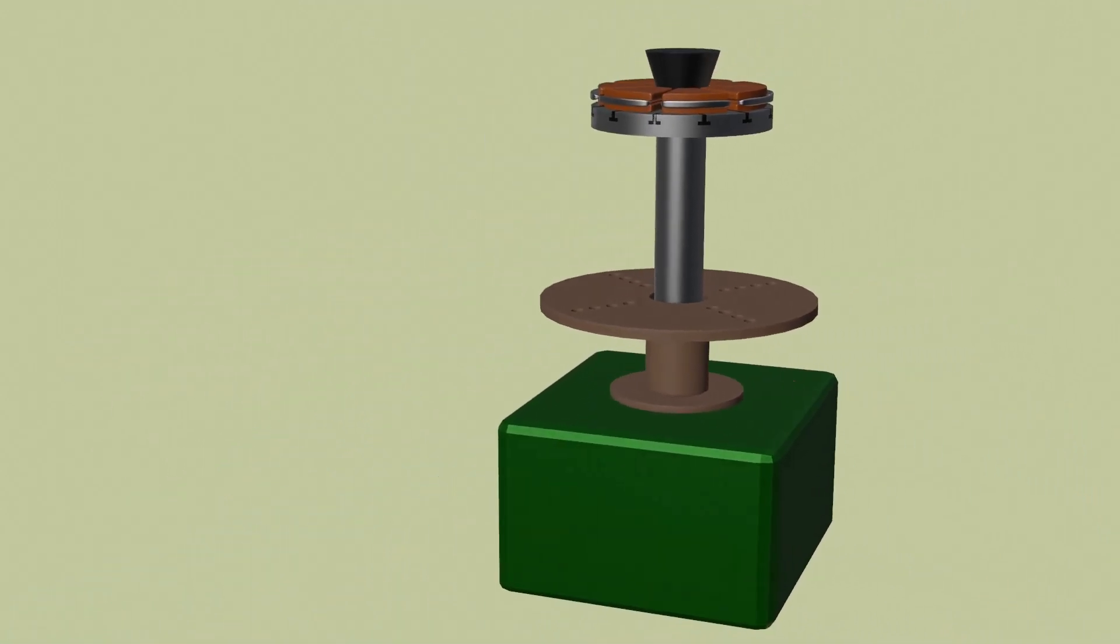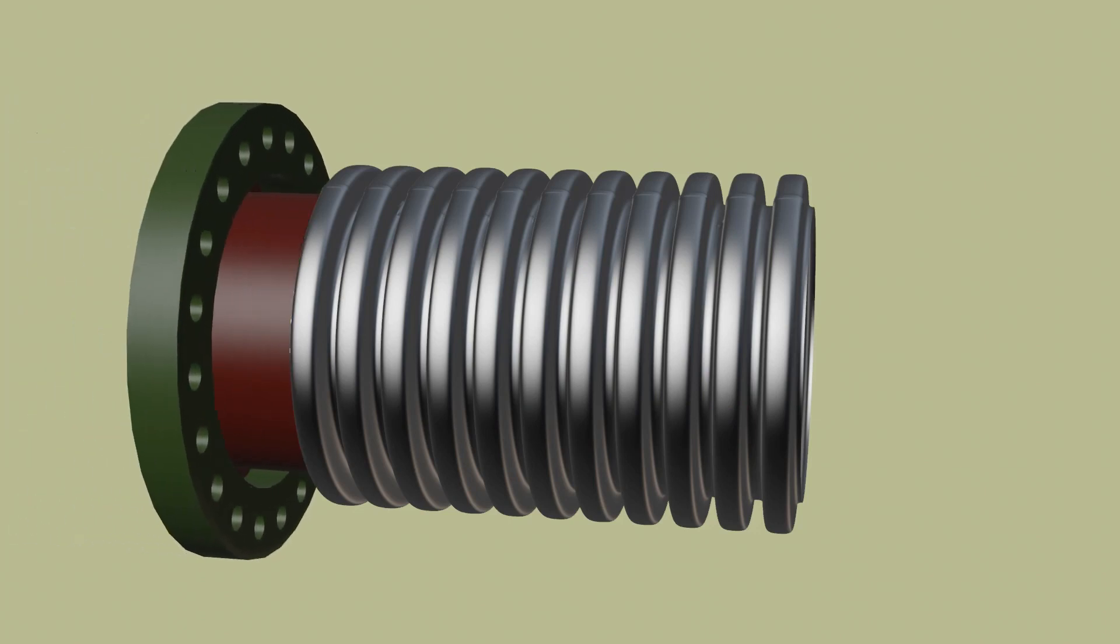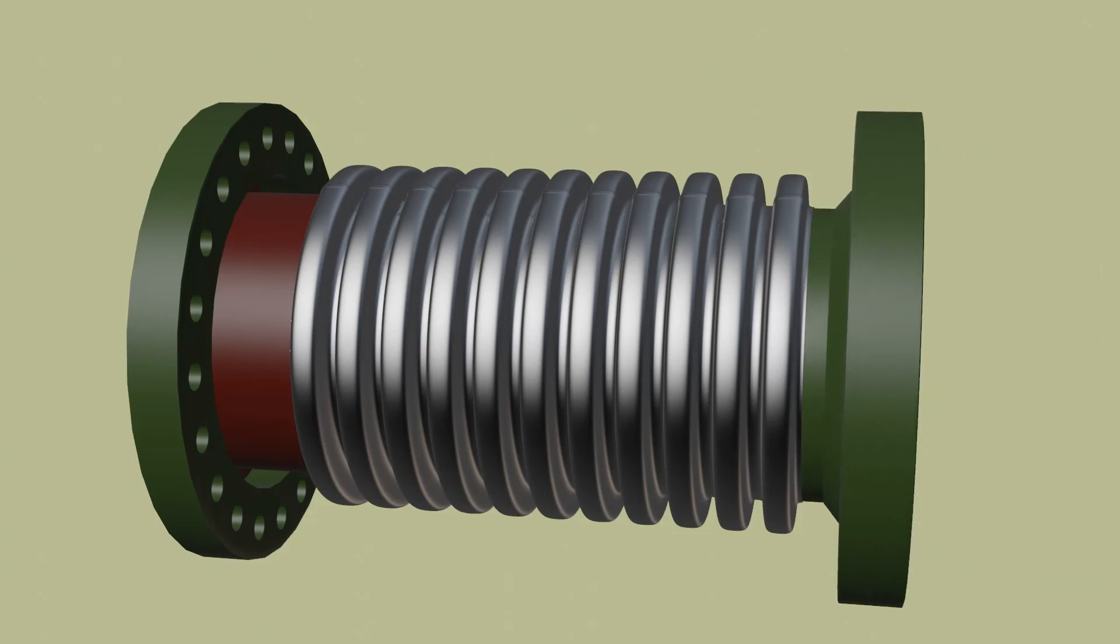After completing the bellow forming, the bellows need to be welded with suitable flanges. Flanges are also welded with mounting brackets.